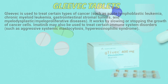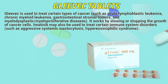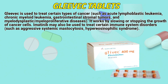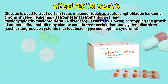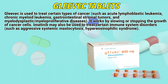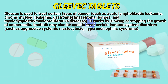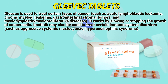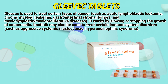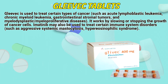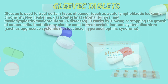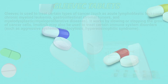Glivik is used to treat certain types of cancer, such as acute lymphoblastic leukemia, chronic myeloid leukemia, gastrointestinal stromal tumors, and myelodysplastic myeloproliferative diseases. It works by slowing or stopping the growth of cancer cells. Imatinib may also be used to treat certain immune system disorders, such as aggressive systemic mastocytosis and hypereosinophilic syndrome.